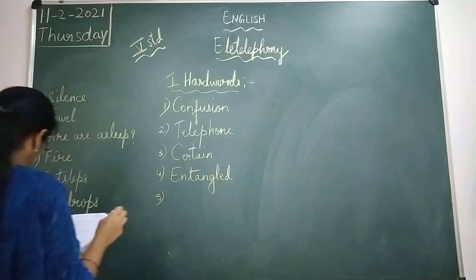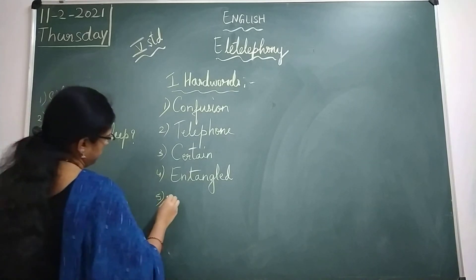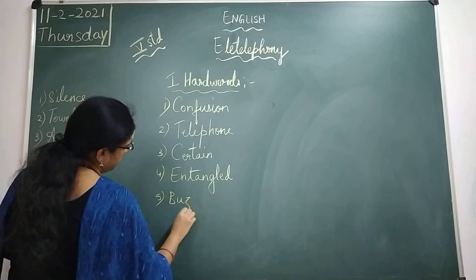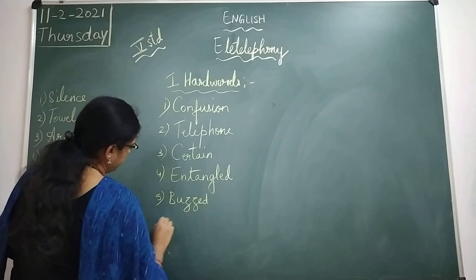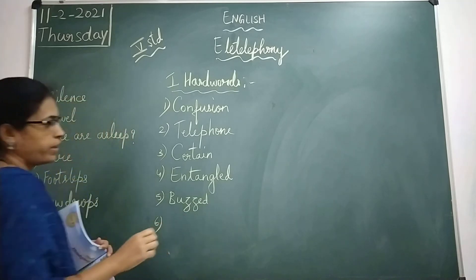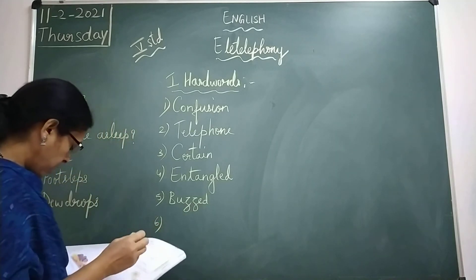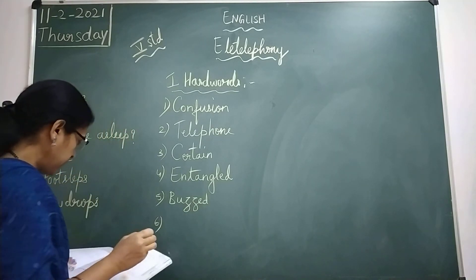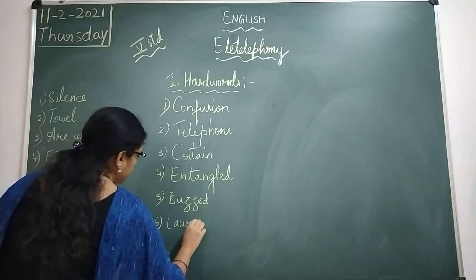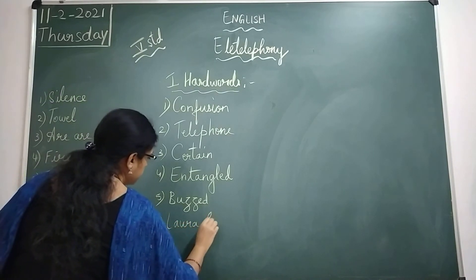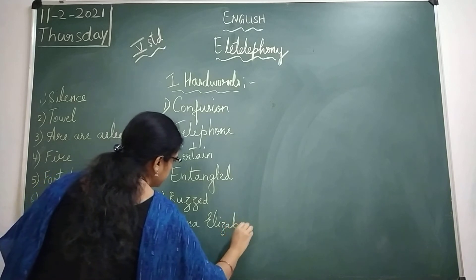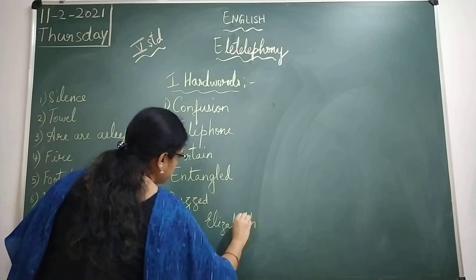The fifth word is Buzz — B-U-Z-Z. And the last word is the poet's name: Laura Elizabeth Richards.